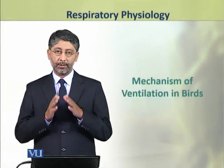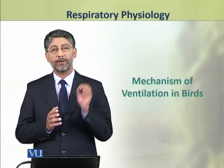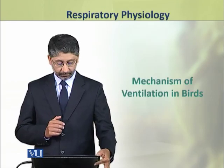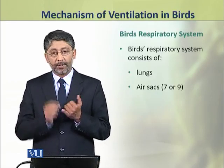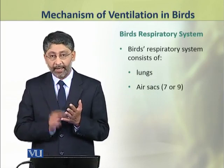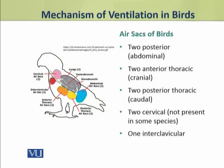In this topic we shall discuss the mechanism of lung ventilation in birds. The bird's respiratory system consists of lungs and air sacs. The number of air sacs in birds may be 7 or 9. These include 2 posterior or abdominal air sacs, 2 anterior thoracic or cranial air sacs, 2 posterior thoracic or caudal air sacs, 2 cervical air sacs which may not be present in some birds, and 1 intra-clavicular air sac.